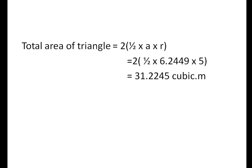We know area of triangle = 1/2 × a × r. Since we have two triangles, we have to multiply it by 2. So, we got the total area of triangle 31.2245 square meter.